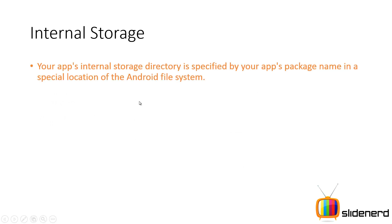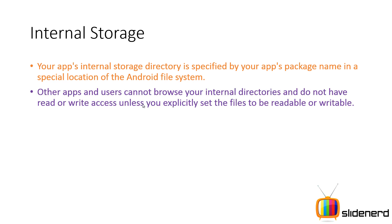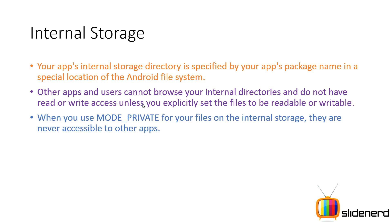Files are stored inside a directory at the path: data/data/[package name]/files. Other apps and users cannot browse your internal directories and therefore do not have read or write access, unless your files are explicitly made readable or writable. You have the option to control how files can be accessed and by whom. You can use MODE_PRIVATE for your files on internal storage, making them accessible only to your app.